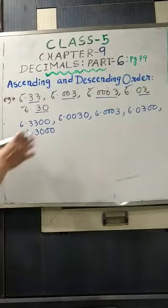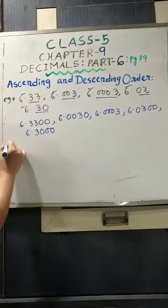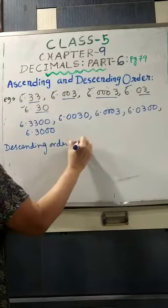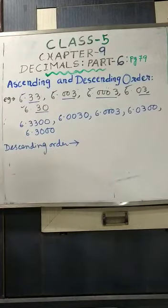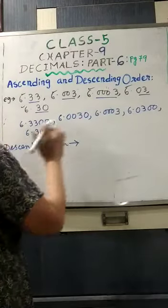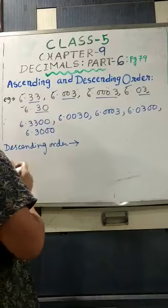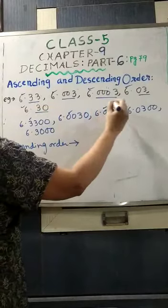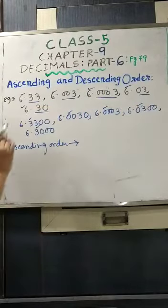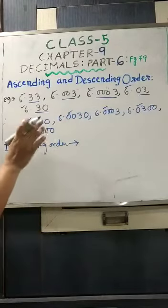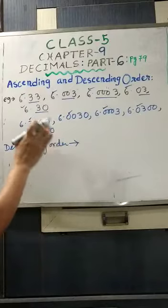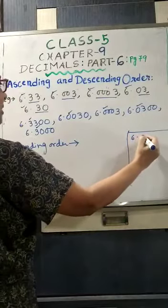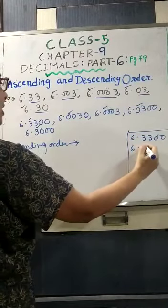As all the whole numbers are the same, we go to the decimal numbers. In the tenths place: 6.3300 has 3, 6.0030 has 0, 6.0003 has 0, 6.0300 has 0, and 6.3000 has 3. As 3 is bigger than 0, we will take the numbers having 3 in the tenths place: 6.3300 and 6.3000.